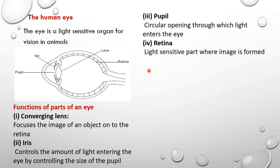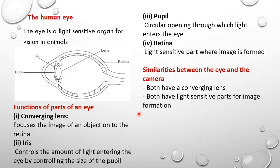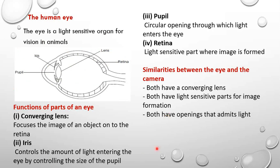Let's look at the similarities between the eye and the camera. Both have converging lenses, and both have light sensitive parts where the image is formed. Both also have openings which admit light, and they both have the ability to control the amount of light entering them.